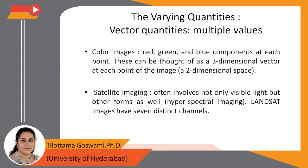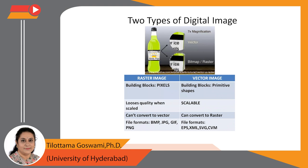The digital image is of two types: raster image and vector image. The building blocks of the raster image are called pixels — picture elements — while the building blocks of the vector image are primitive shapes like lines and arcs. The raster image loses quality when scaled, whereas the vector image is scalable. The raster image cannot be converted to a vector image, whereas a vector image can be converted to a raster image. File formats for raster images include BMP, JPEG, and PNG; for vector images, formats include EPS, XML, SVG, and CDR.